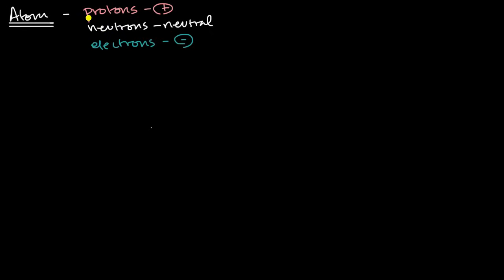An early model for how an atom worked was maybe you have your protons and neutrons in the center. So let's say we're talking about a helium atom — a helium atom has two protons in the nucleus, and a typical helium atom would have two neutrons as well. Early physicists and chemists said the protons have a positive charge, electrons have a negative charge, so they'll be attracted to each other. Opposite charges attract, the same charge repels. So maybe the electron orbits around the nucleus the way that a planet would orbit around its star.